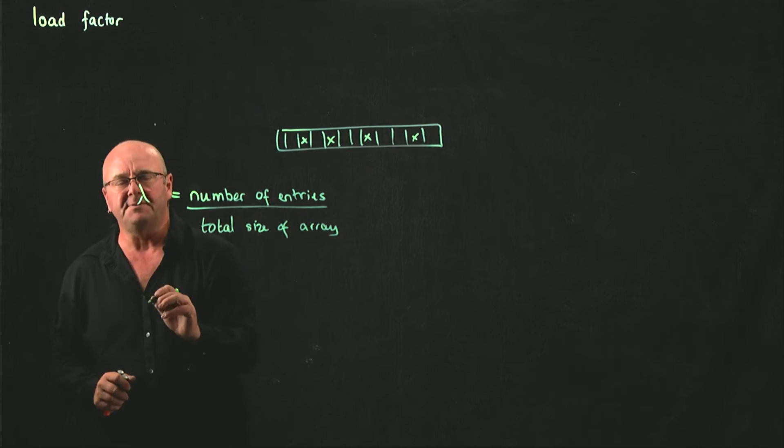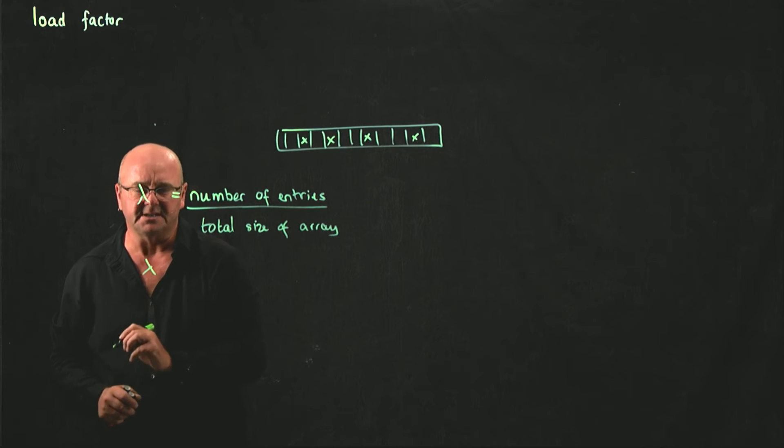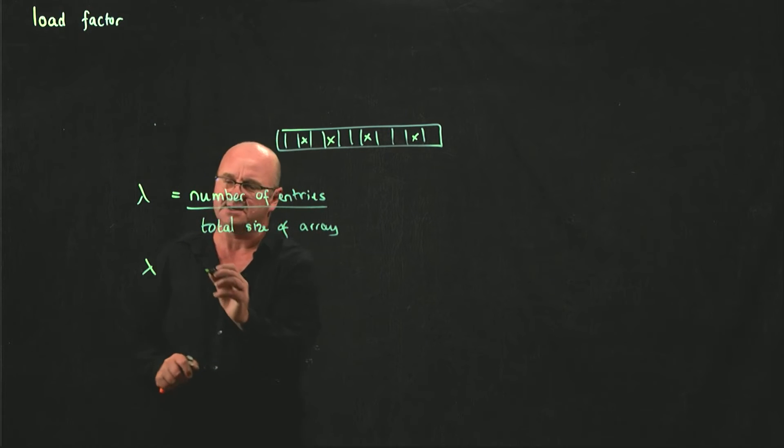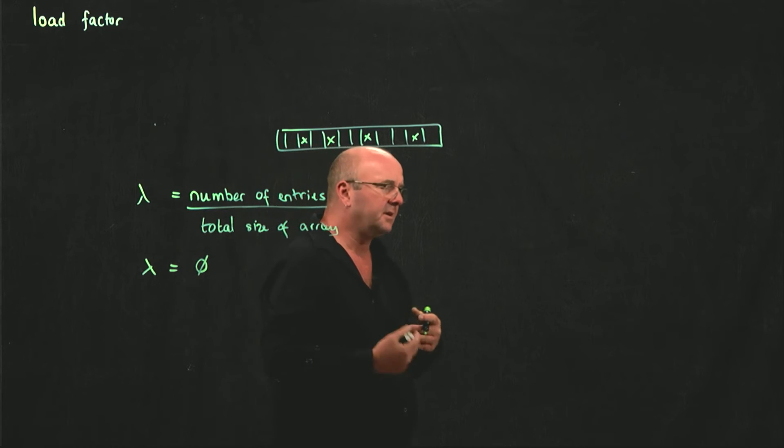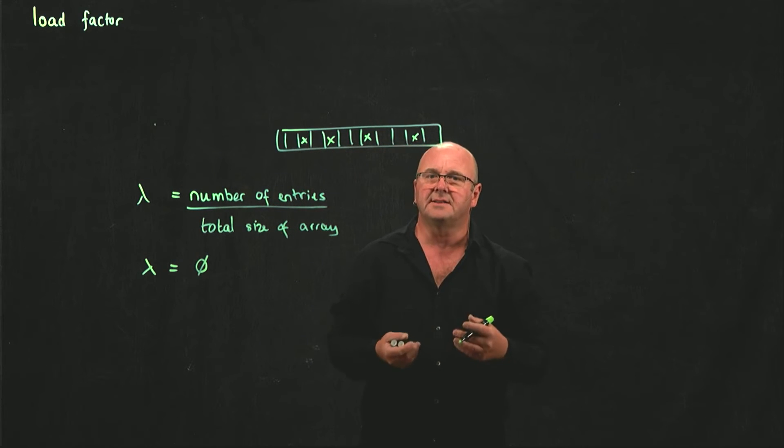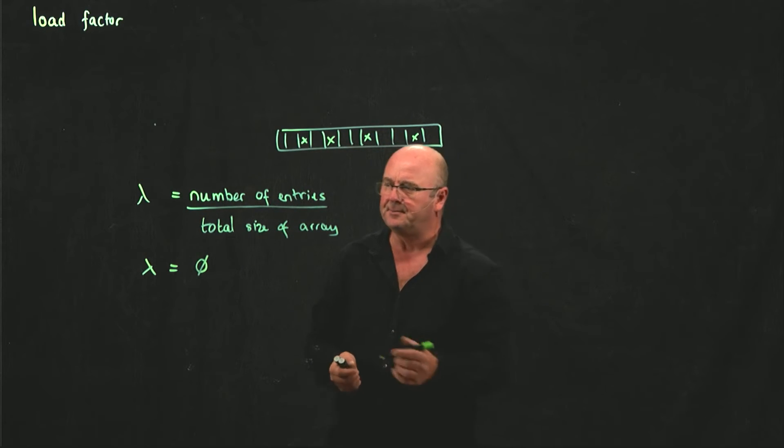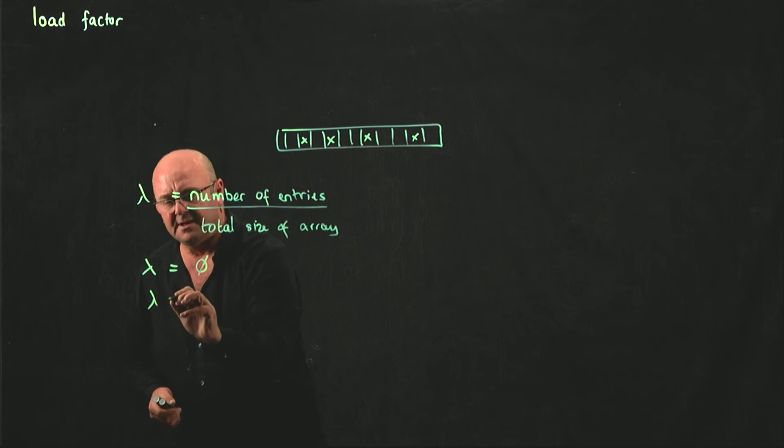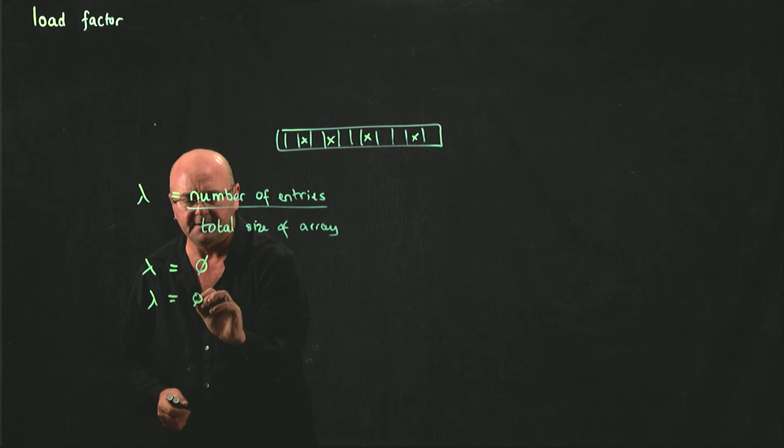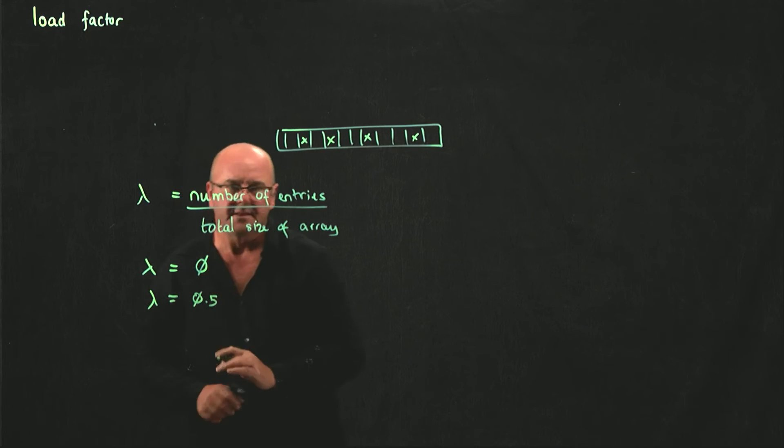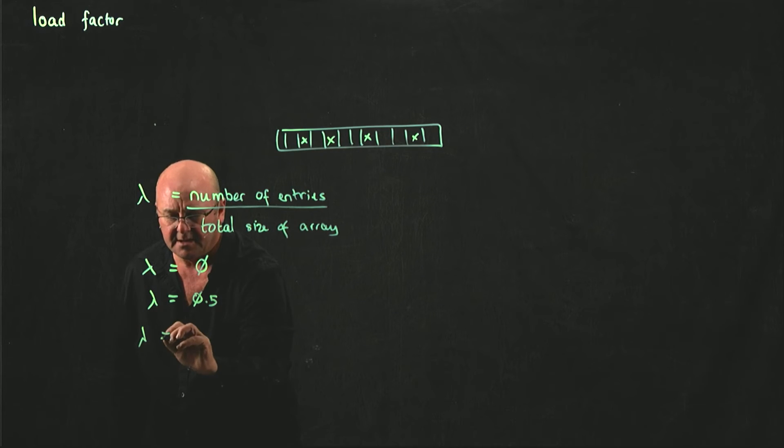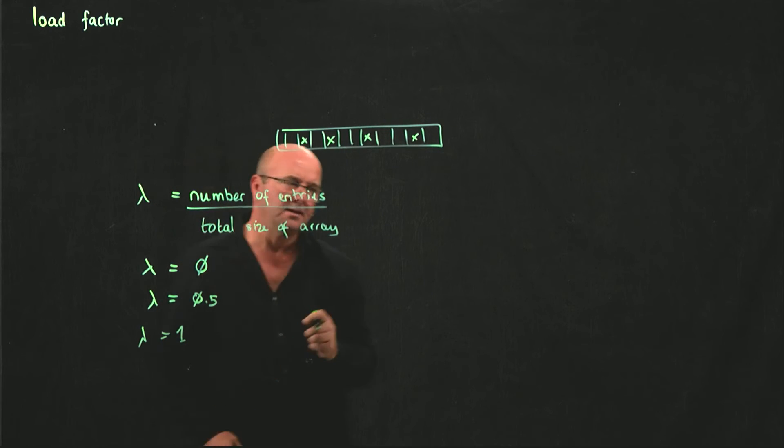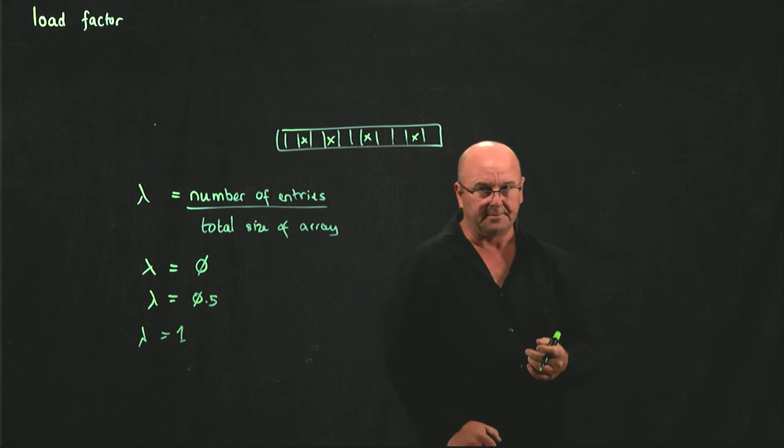So the lambda, the load factor, is a convenience for us because it allows us to quickly assert, for example, if lambda is 0, then our data structure is empty. If our load factor is a half, then our data structure is half full. And if lambda is 1, then our data structure is full and we need to do something about that.